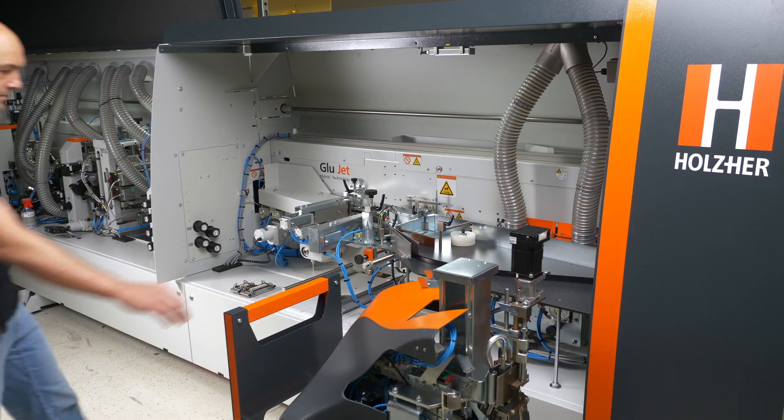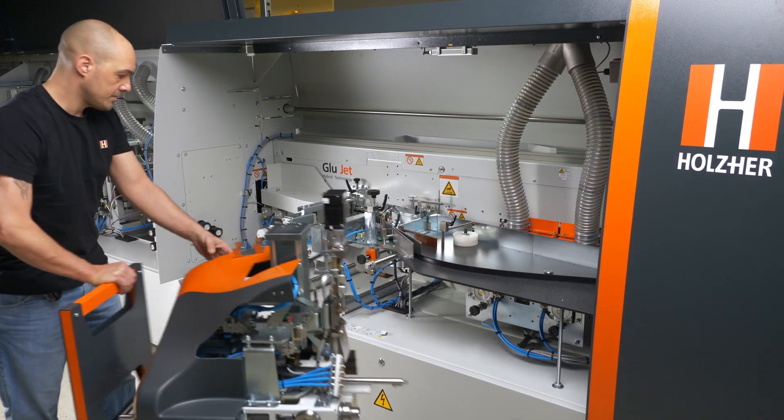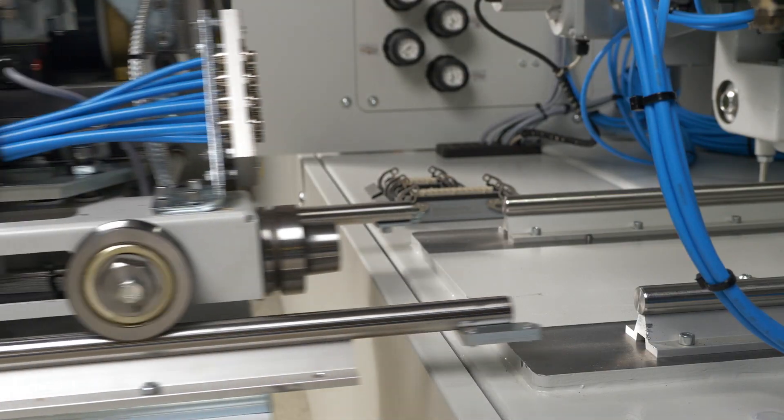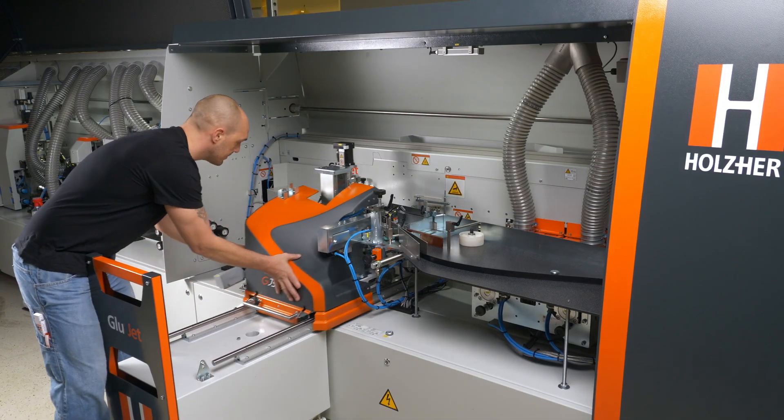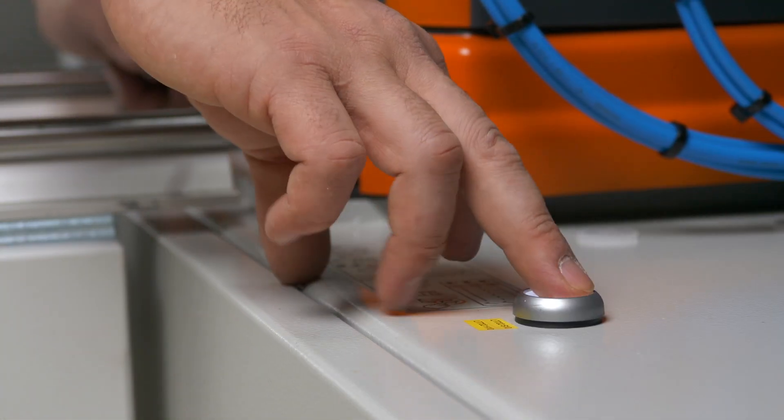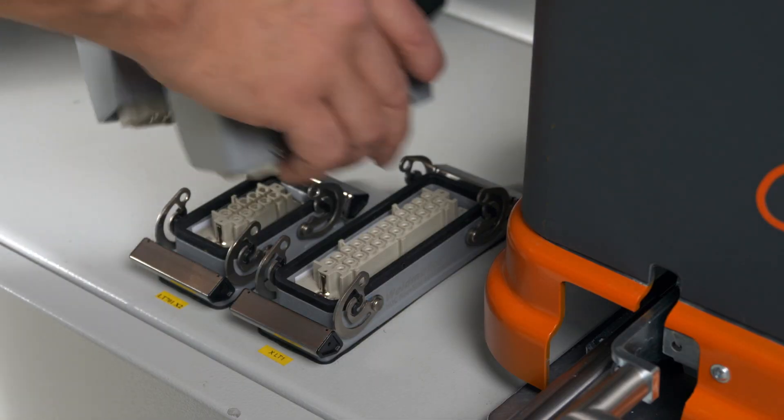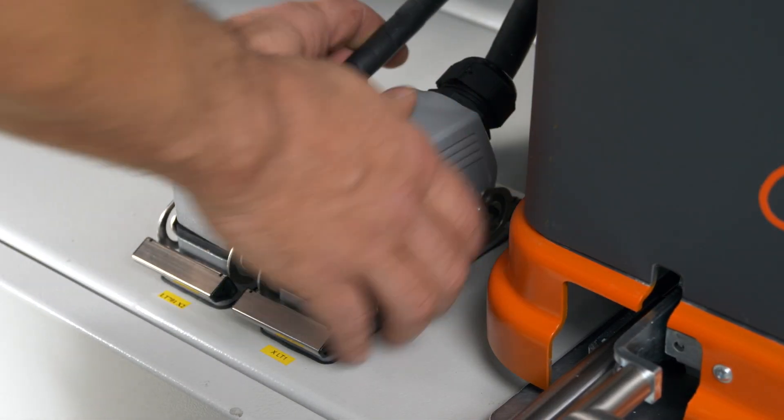A high precision interface allows the Holtshair glue jet station to be switched over to applications with waterproof PUR glue in minutes. The Lumina automatically recognizes when the glue station is changed, allowing you to start production after a 3 minute heat up time.